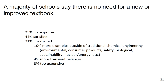We asked faculty what they thought about the current textbooks available for the course. In general, people were satisfied. 25% didn't respond at all, which we assumed meant the textbooks were okay. 44% were satisfied and 31% unsatisfied. For faculty who were unhappy with the textbook, the most common request was more examples outside of traditional chemical engineering — suggested fields included environmental, consumer products, safety, biological, sustainability, and nuclear and energy. Some people wanted more transient balances, and some thought the textbooks were too expensive.